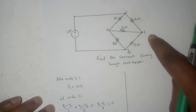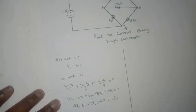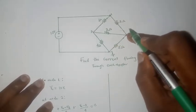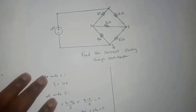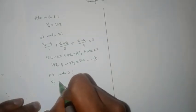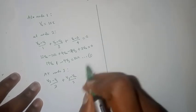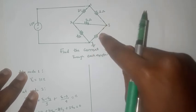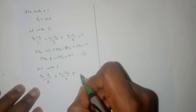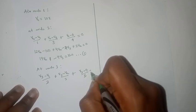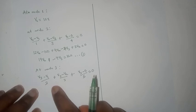We can then proceed to node 3. At node 3, we have this branch: V3 minus V1 divided by 2, then we'll write for this branch: V3 minus V2 divided by 3, plus V3 minus 0 divided by 5, plus V3 minus 0 divided by 4. By Kirchhoff's current law, everything equals 0.